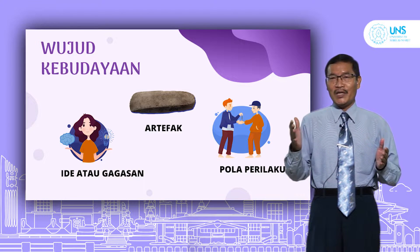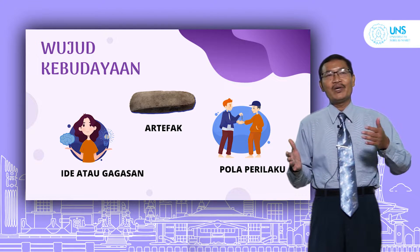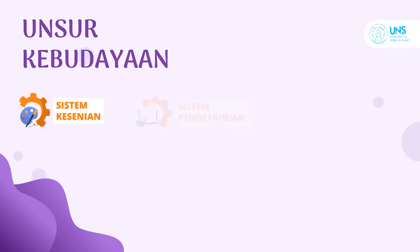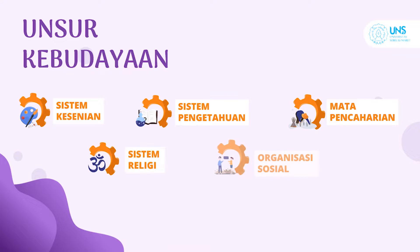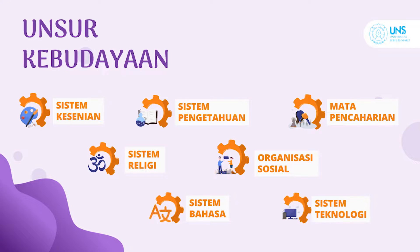Kalau kesenian sejajar dengan kebudayaan, kebudayaan punya wujud, kesenian juga punya wujud. Ada hal yang lebih penting lagi: kebudayaan itu ada unsur-unsurnya, ada sistem kesenian, sistem religi, sistem bahasa, sistem pengetahuan, organisasi sosial, sistem teknologi, dan mata pencaharian. Ini unsur-unsur kebudayaan.